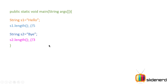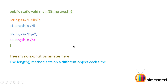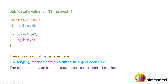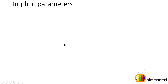Notice that the length method does not take any argument in the parentheses, yet it works with the object and its data to return 5 for s1 and 3 for s2. There is no explicit parameter here. The length method acts on a different object each time, so the object itself is the implicit parameter to the length method. Implicit parameters are the objects on which the methods are being called.